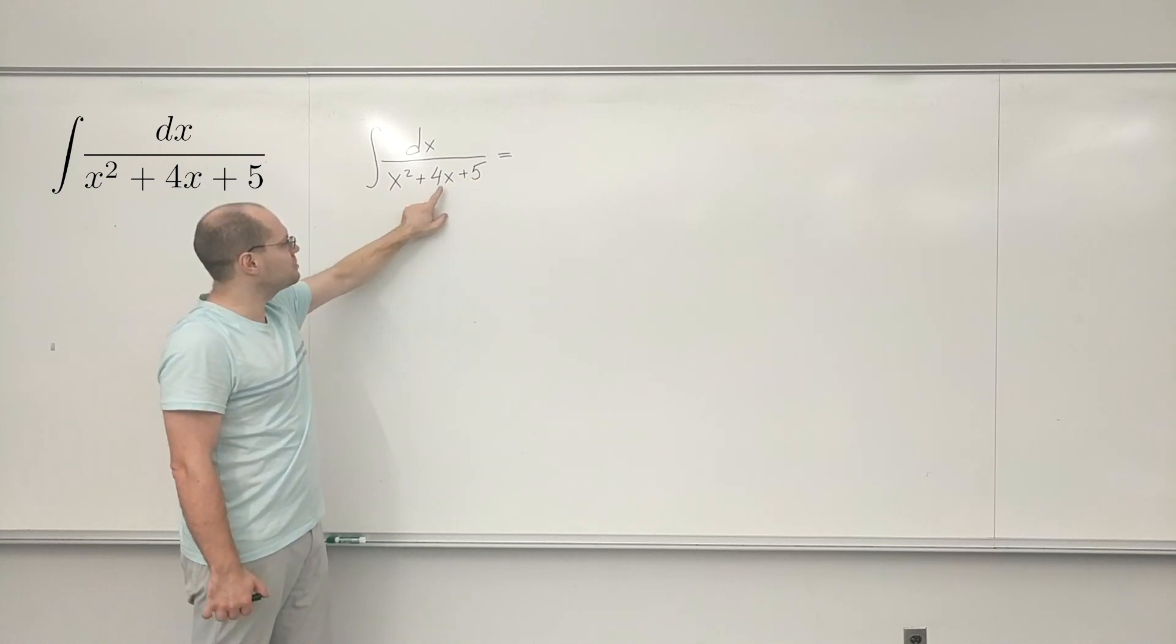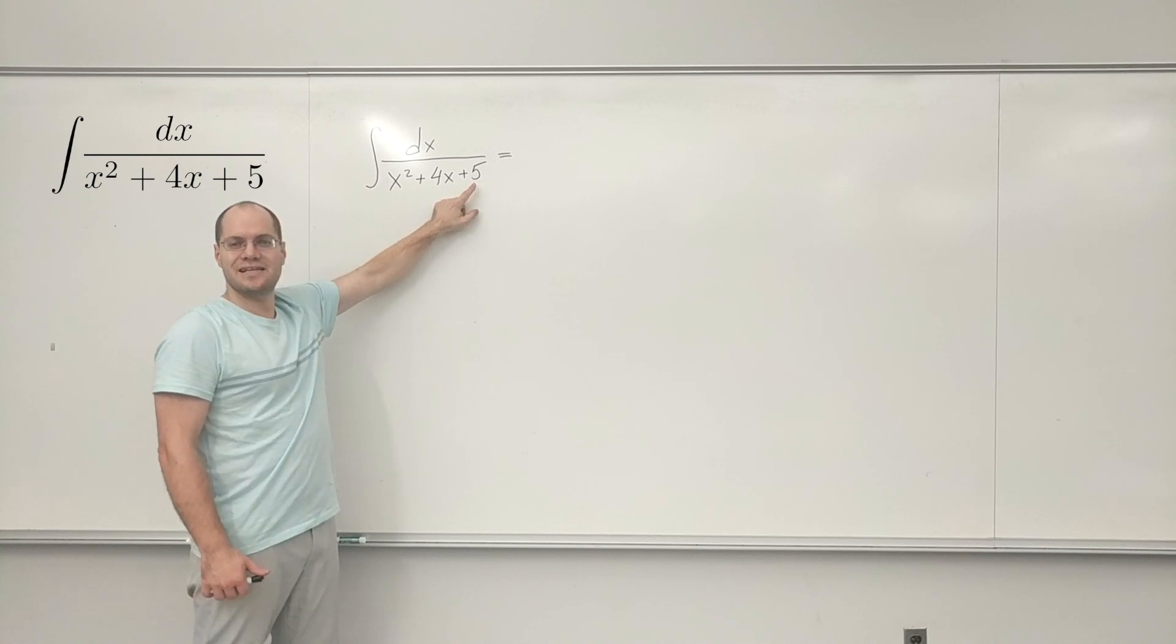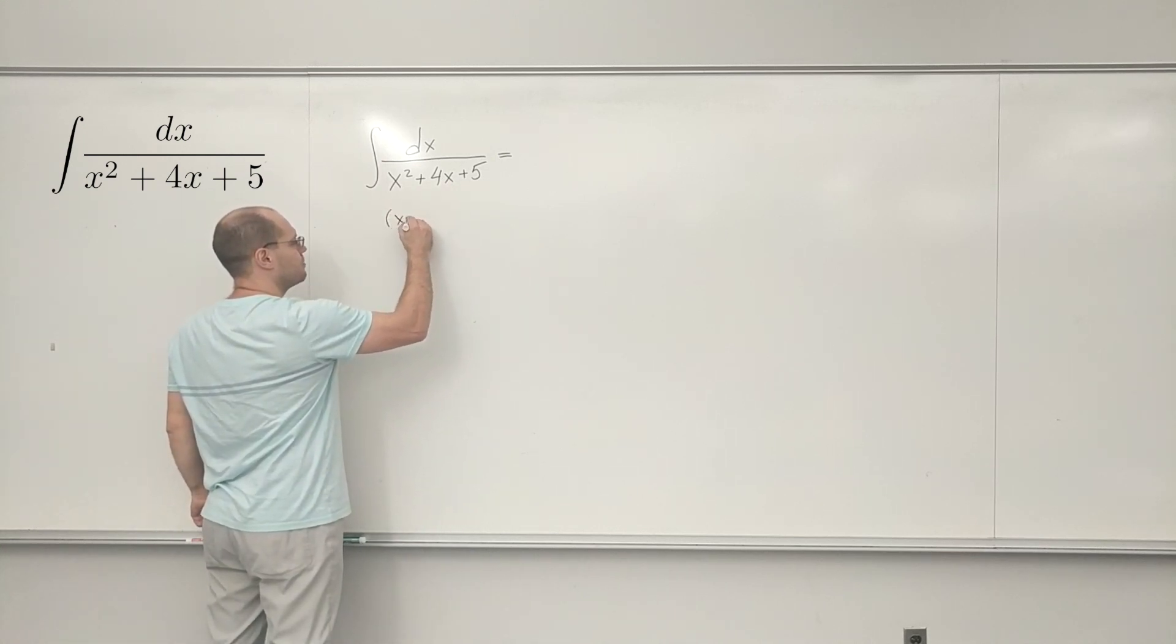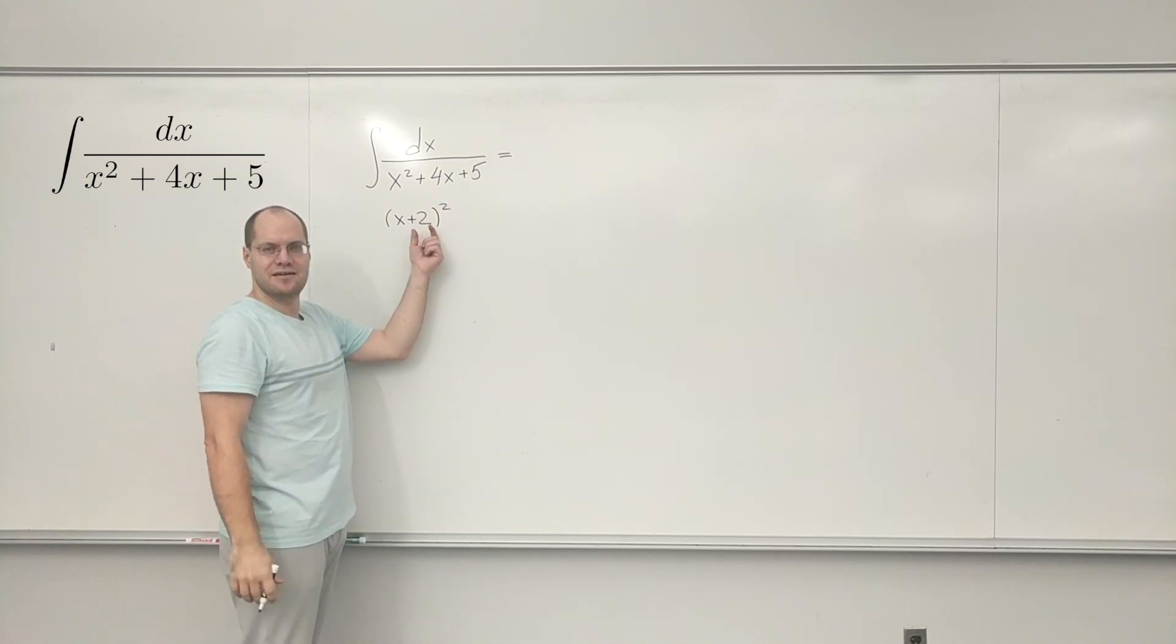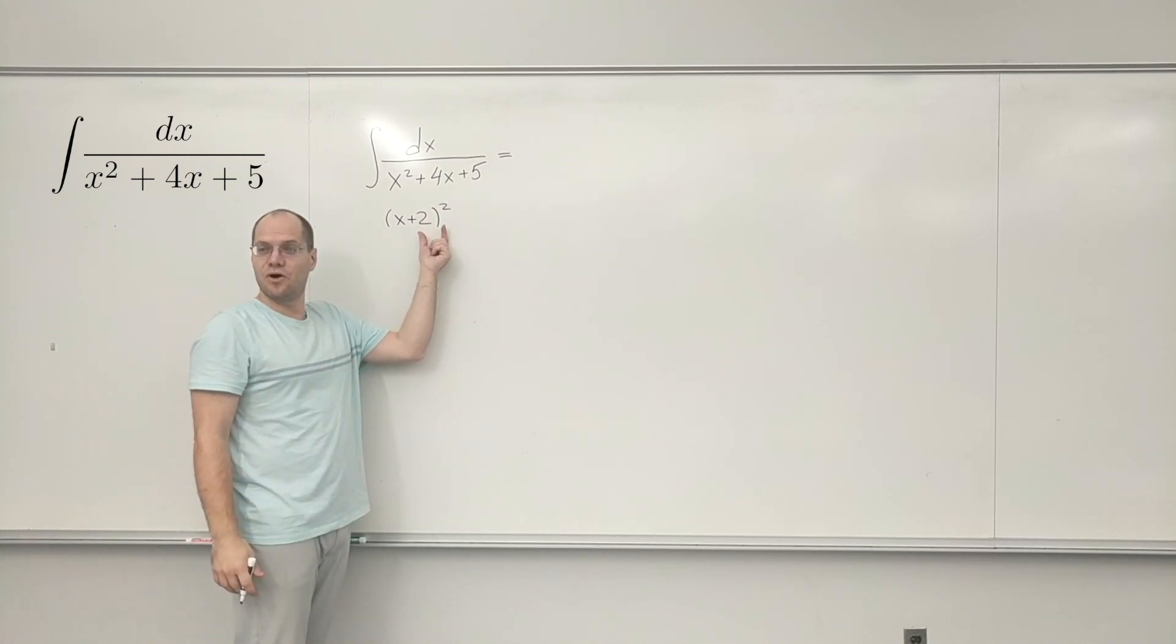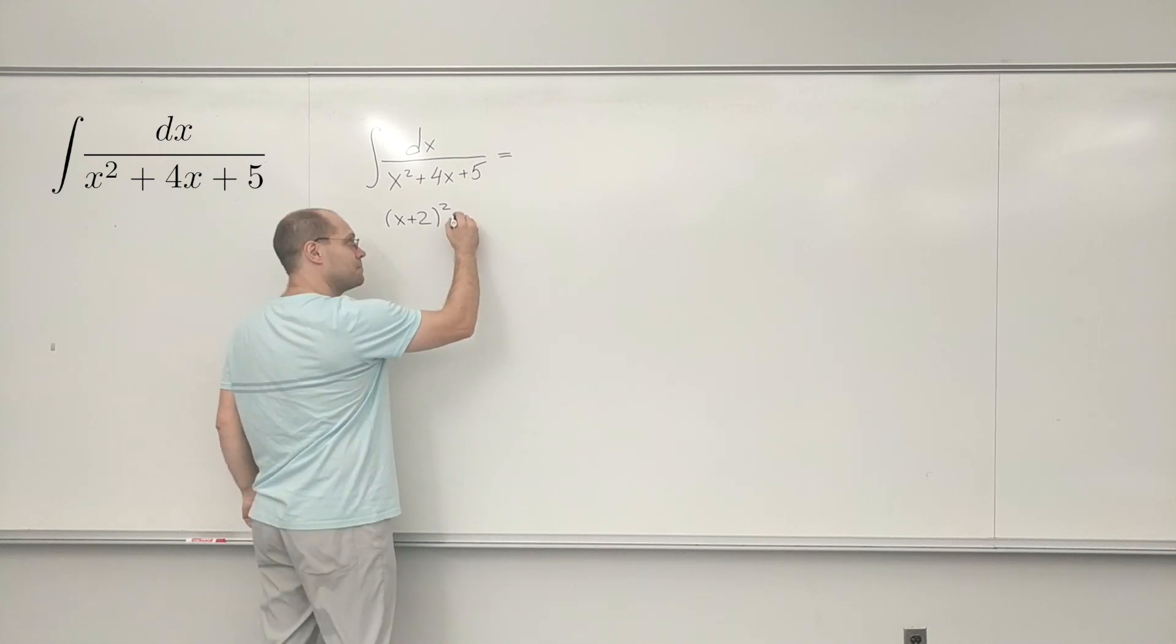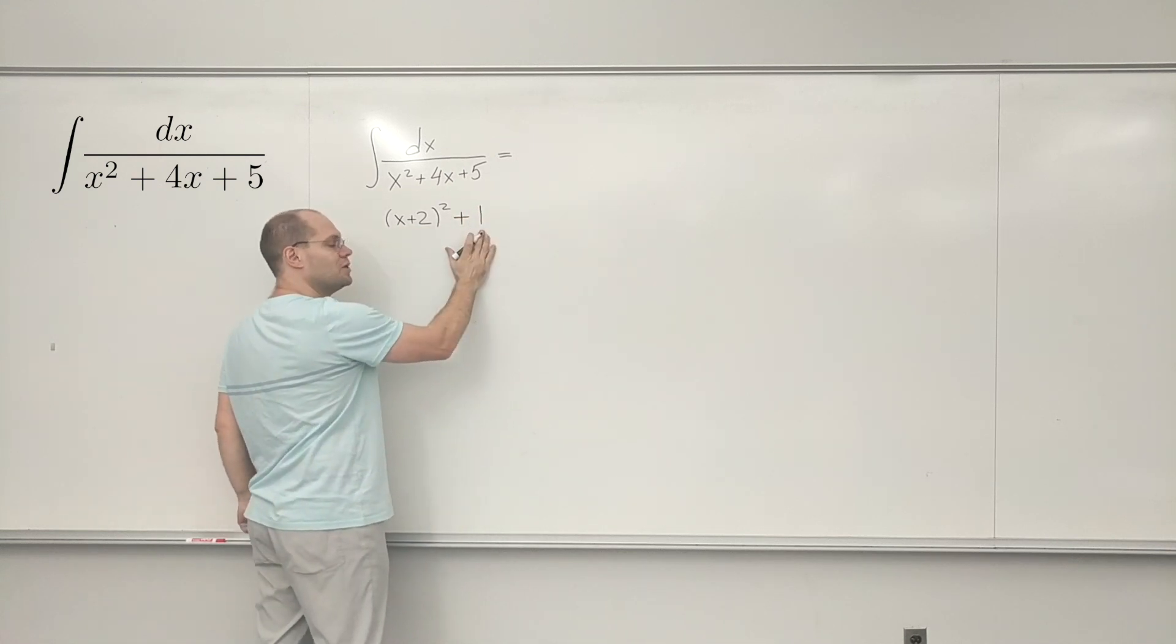When you have x squared plus 4x plus 4, that's perfect x plus 2 squared. You must be able to recognize that. So that will produce plus 4. So this is not plus 4 because we have plus 5. It's this plus 1.